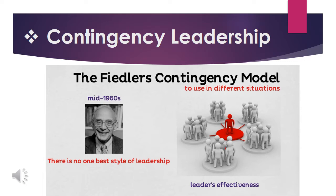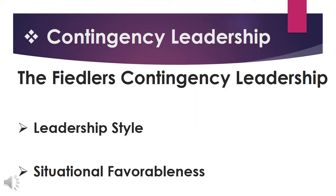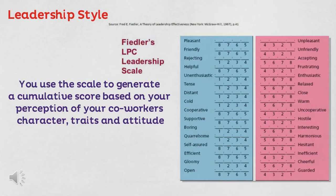Next is Fiedler's Contingency Model of Leadership, created in the mid-1960s by Fred Fiedler, a scientist who studied the personality and characteristics of leaders. The model states that there is no single best style of leadership; instead, a leader's effectiveness is based on the situation. This results from two factors: leadership style and situational favorableness.